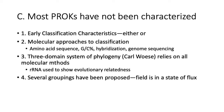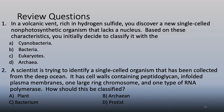Review questions: In a volcanic vent rich in hydrogen sulfide, a new single-celled non-photosynthetic organism lacking a nucleus is initially classified as archaea because they live in extreme conditions. A deep ocean organism with peptidoglycan cell walls, enfolded plasma membranes, one large ring chromosome, and one type of RNA polymerase should be classified as a bacterium because of the peptidoglycan cell wall.